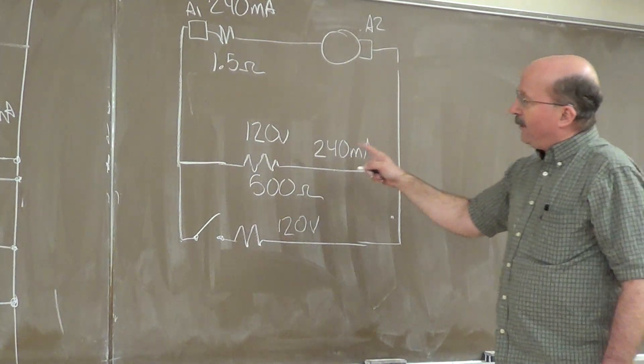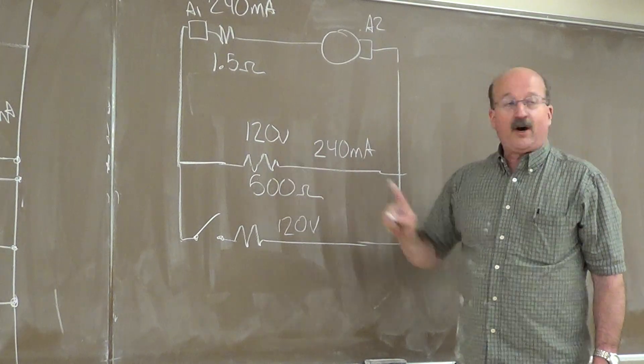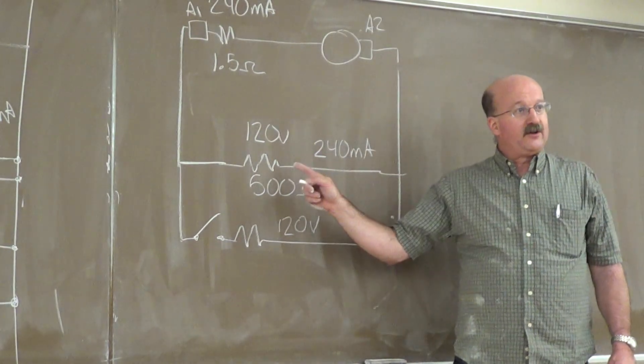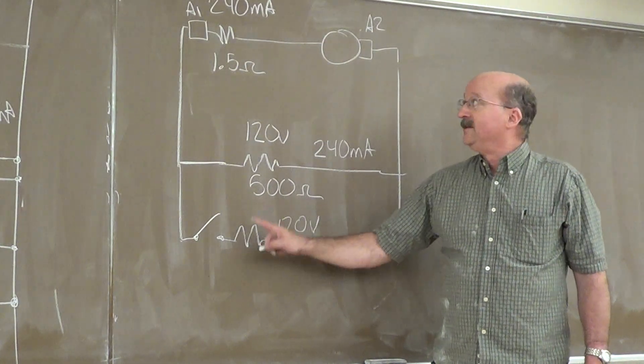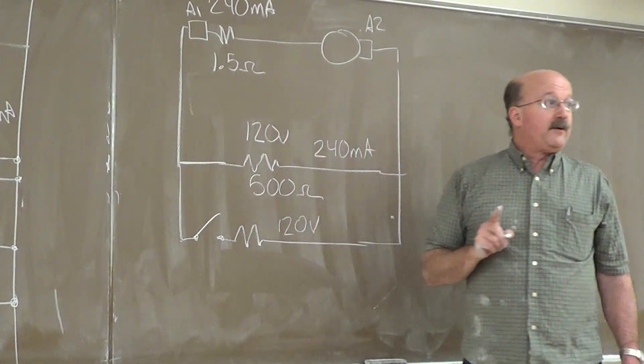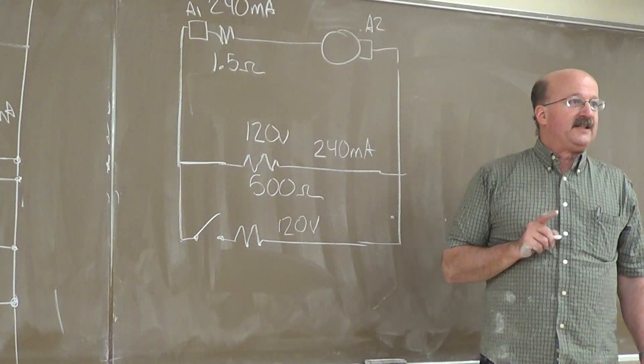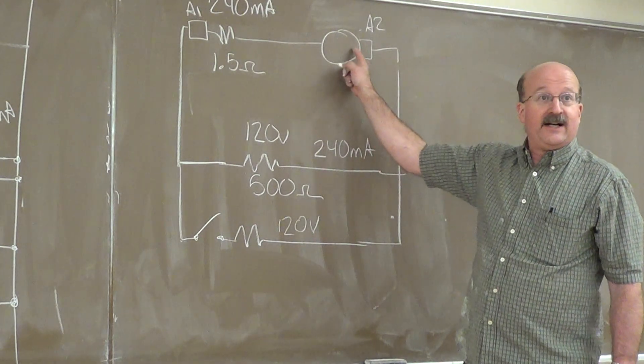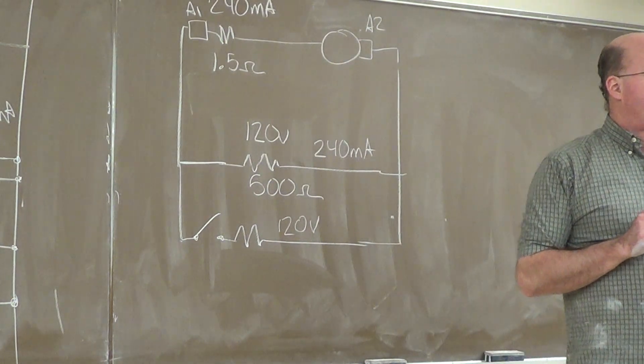We have our combination circuit here. Our generator, we have our output voltage of 120 volts. The load is disconnected. We have 240 milliamps going through the generator. We can calculate exactly what is being generated here, and that is our no-load voltage off the generator.